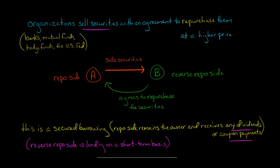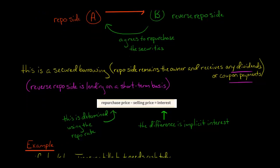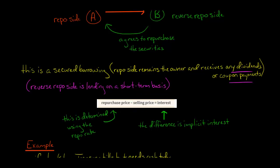This is really a borrowing arrangement. The reverse repo side is lending funds to the repo side on a short-term basis. The difference between the selling price — where the repo side sells the securities to the reverse repo side and then agrees to repurchase them — and those two prices is the implicit interest.